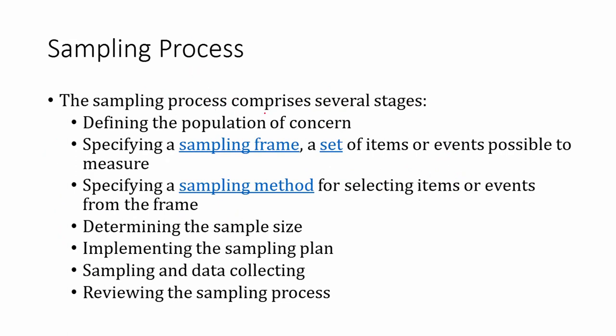What is the sampling process in a research environment? The first thing you do is define the population of interest — what is your population and what available data do we have? You may not have access to the true population. For example, if you want to study the consumption pattern of the world, you cannot go to each household, so you define the population you have access to, which may not be the entire true population.